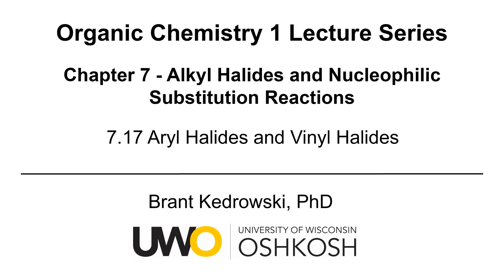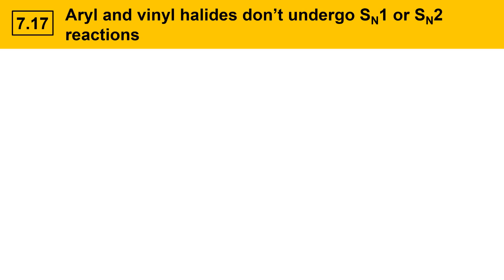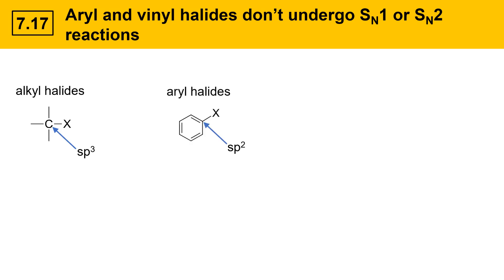Hello everyone, my name is Brant Kudrowski and this organic chemistry video covers aryl halides and vinyl halides. Aryl and vinyl halides don't undergo SN1 or SN2 reactions the same way that alkyl halides do. Let's take a look at the structure of alkyl halides to review. An alkyl halide contains an sp3 hybridized carbon attached to a leaving group. These are the substrates that we've been looking at that undergo SN1 or SN2 substitution reactions in chapter 7.